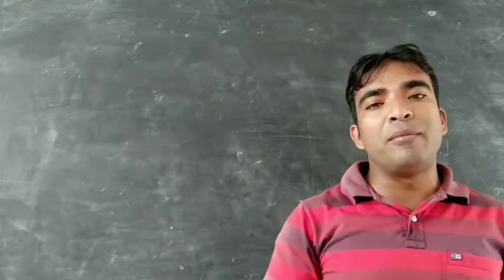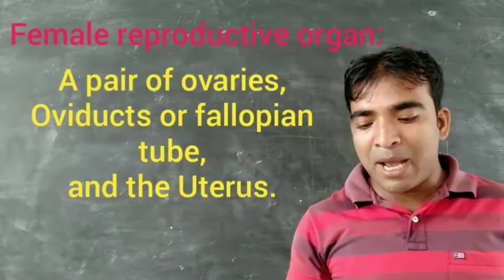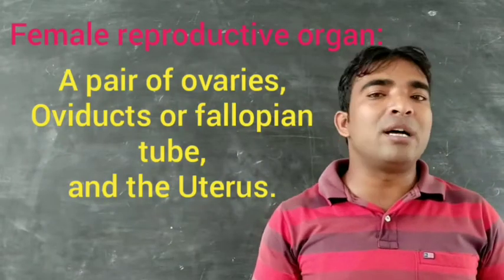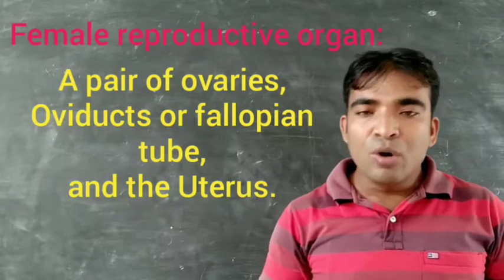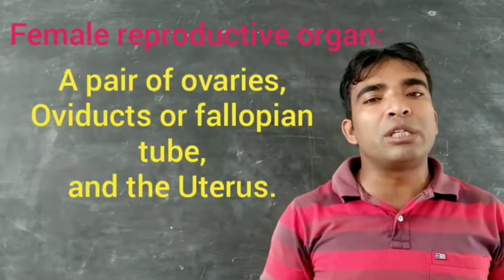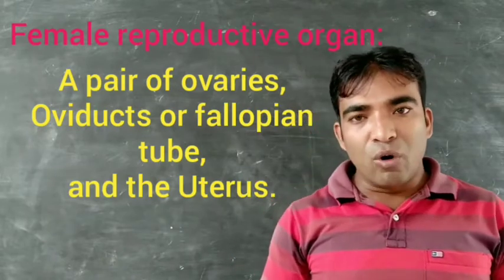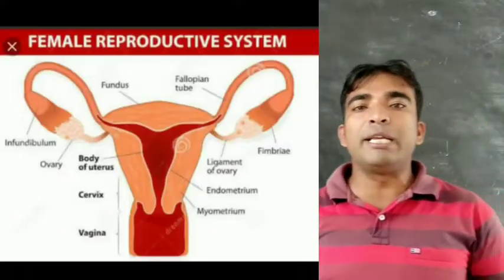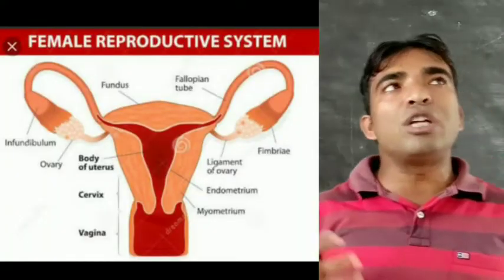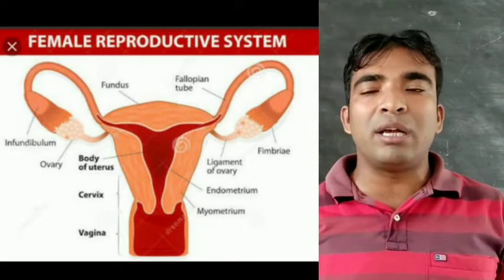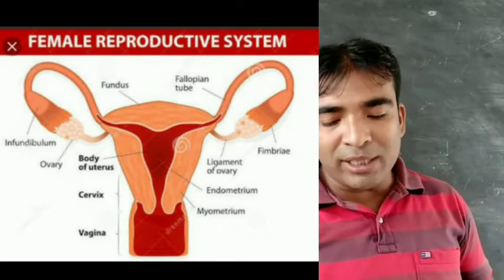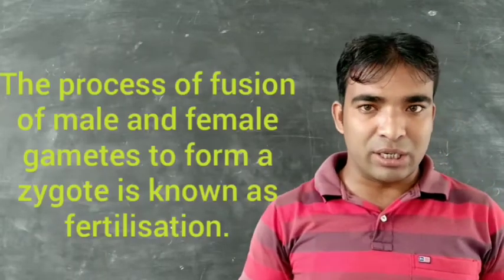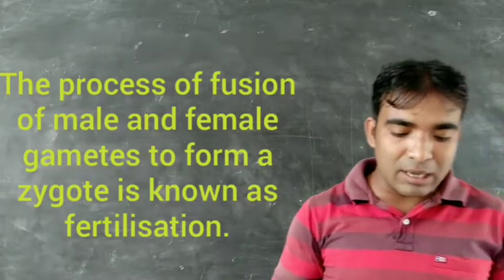The female reproductive organs include a pair of ovaries, oviducts or fallopian tubes, and the uterus. The ovaries produce the ova or eggs, and this egg is also unicellular just like the sperm. When the sperm and the egg fuse together to form a zygote, this process is known as fertilization.